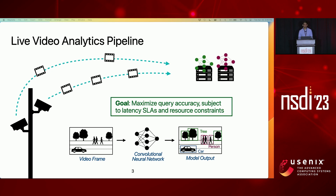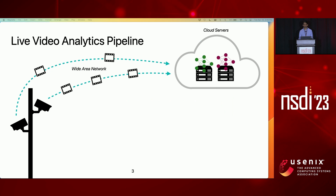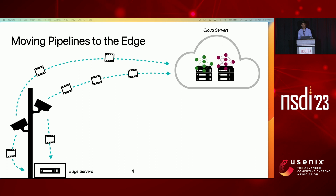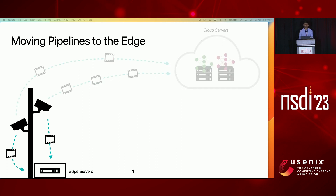Traditional deployments ship camera feeds over the wide area network, or the cellular network, to the cloud. However, due to growing camera deployments and increasingly stringent latency targets, these ML pipelines are moving to the edge. Companies like Amazon, Microsoft, and NVIDIA have developed lightweight compute boxes specifically designed for the edge that can be placed to provide low-latency connectivity to multiple cameras, say at an intersection. These edge boxes are now responsible for ingesting and processing multiple camera feeds.